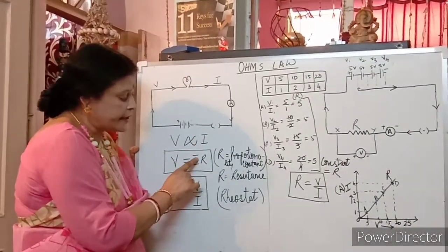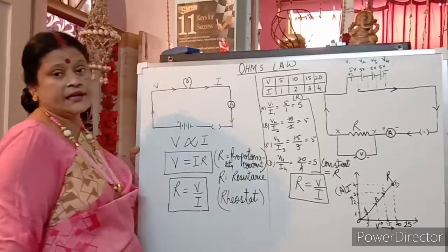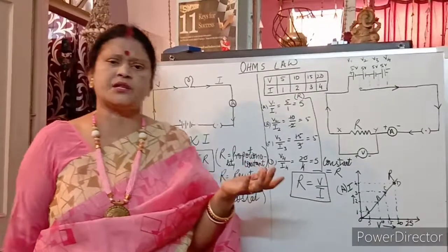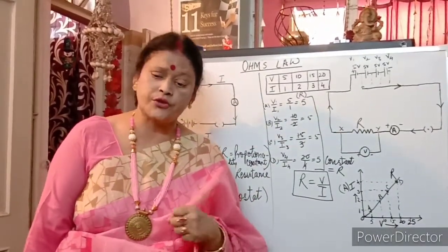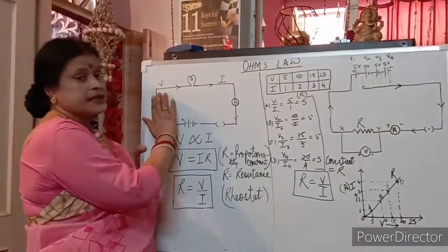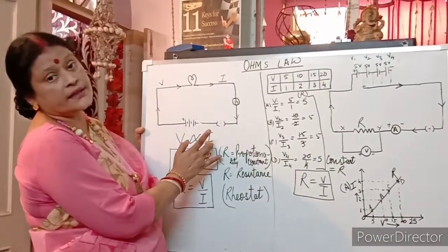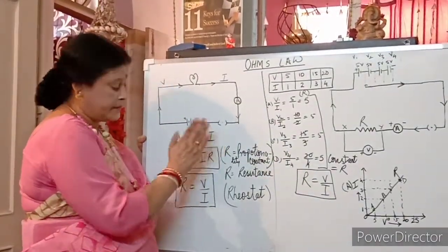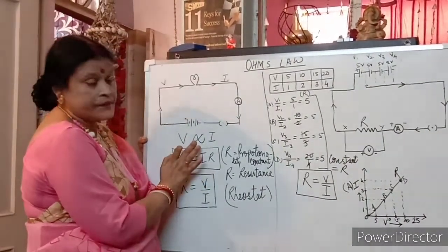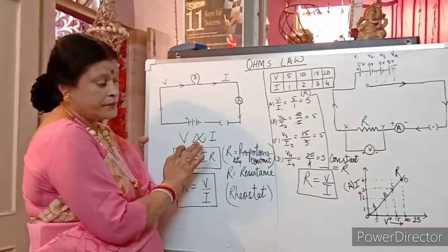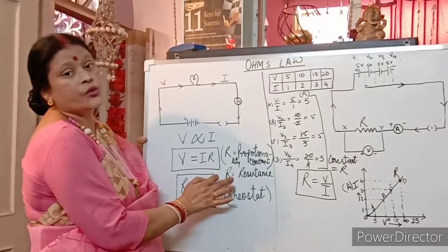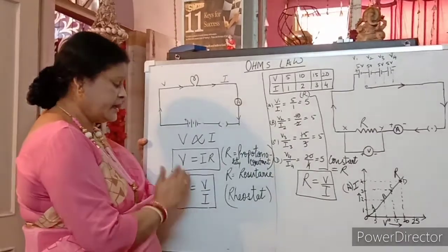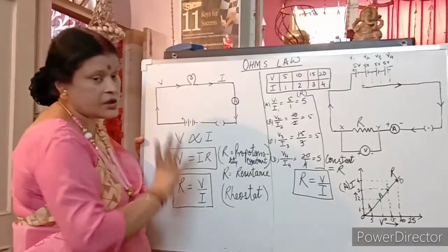According to Ohm's Law, at constant temperature — and not just temperature, we keep any physical condition constant, whether pressure or temperature — the potential difference is directly proportional to the current flowing through the conductor. So V is directly proportional to I. When we apply the equal sign, we get R, the proportionality constant, which is resistance. So our formula is V = I × R, and if we need to find R, then R = V / I.